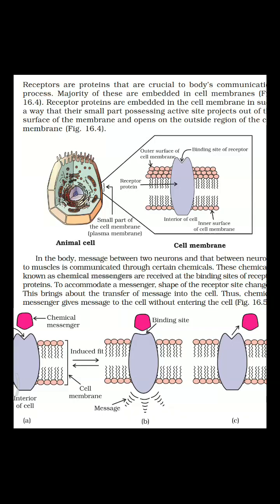These receptor proteins are embedded in the cell membrane in such a way that their small portion, containing some active sites, projects out of the surface of the membrane and opens on the outer region of the cell membrane. See this diagram — you can see the cell membrane, and this receptor protein is embedded such that part of it is protruded out.